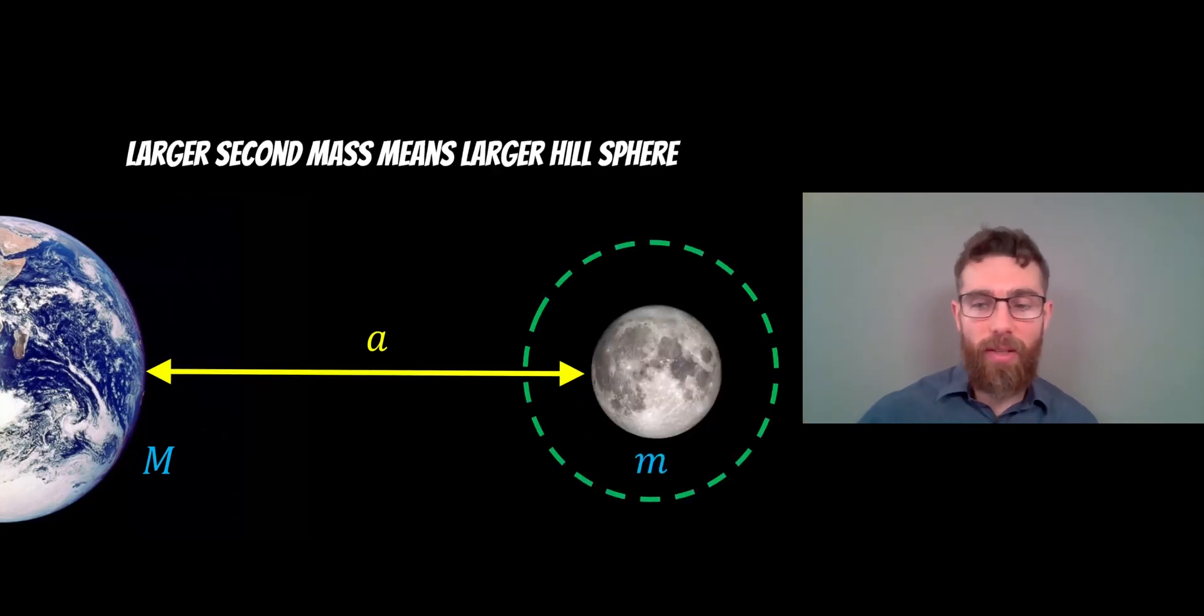If the moon mass was larger, then the hill sphere would be larger. So it scales with the mass of that second object as well as the larger mass.